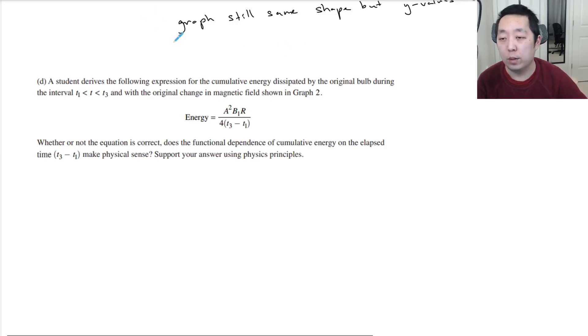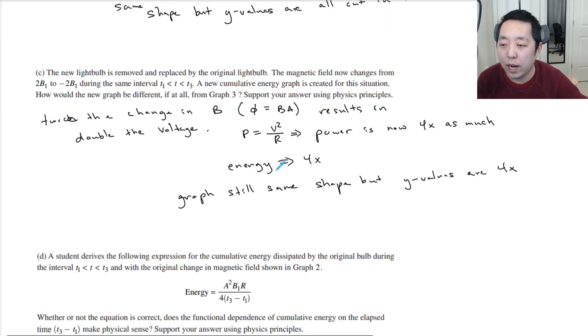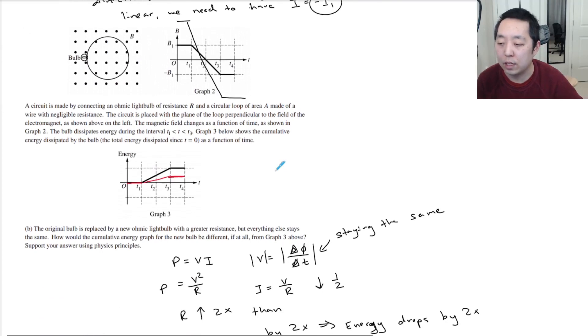I wanted to do a correction on part D because someone pointed out when I first uploaded this video that I interpreted D incorrectly. It was such a glaring error that I think it warrants an explanation. Part D: A student derives the following expression for the cumulative energy dissipated by the original bulb during the interval t1 to t3. Whether or not the equation is correct, does the functional dependence on cumulative energy and elapsed time make physical sense?